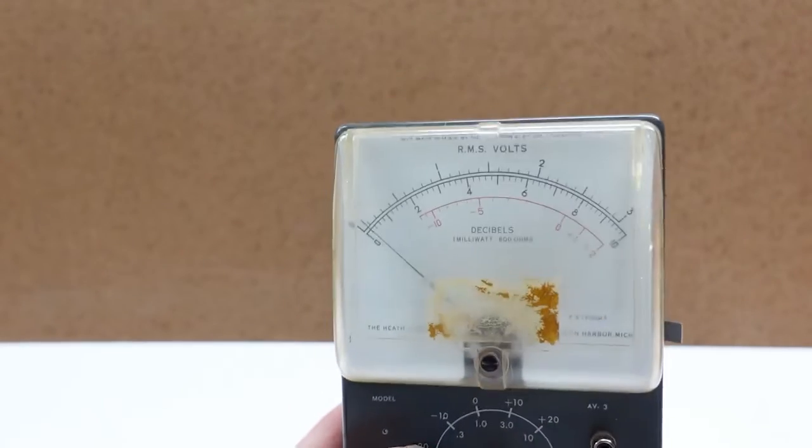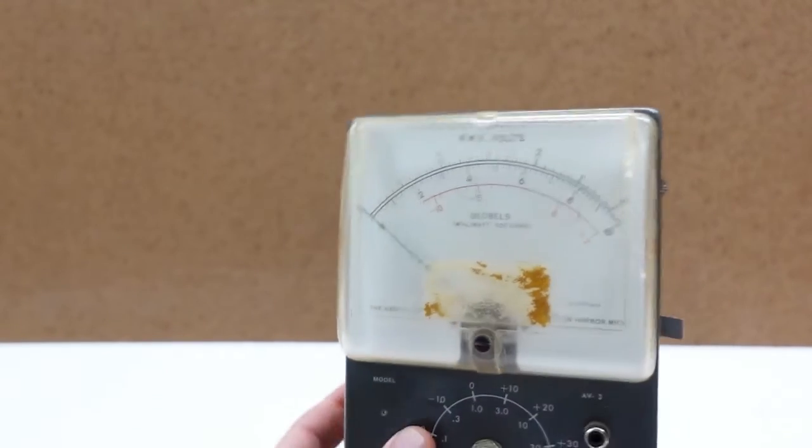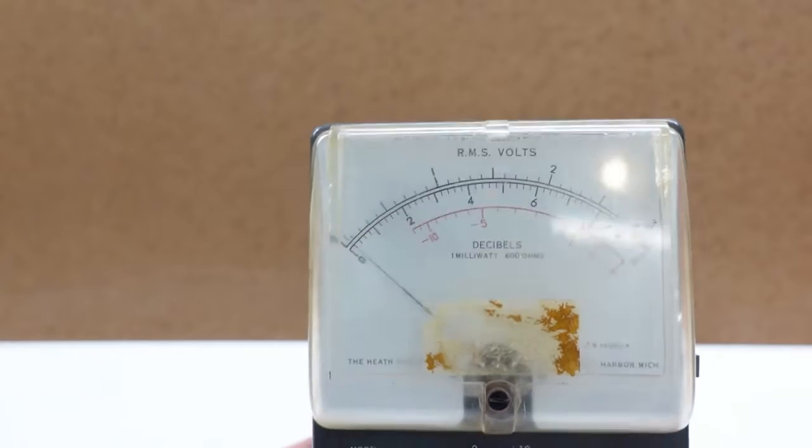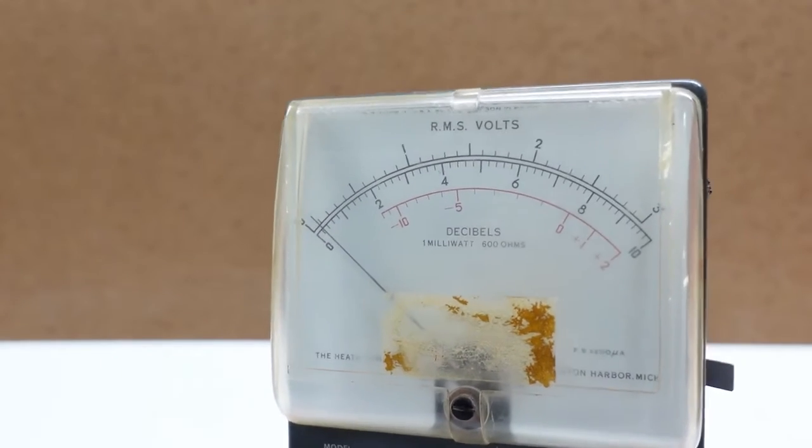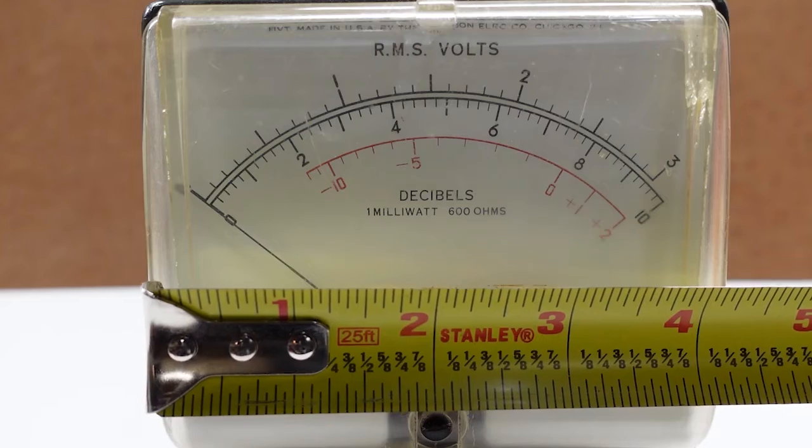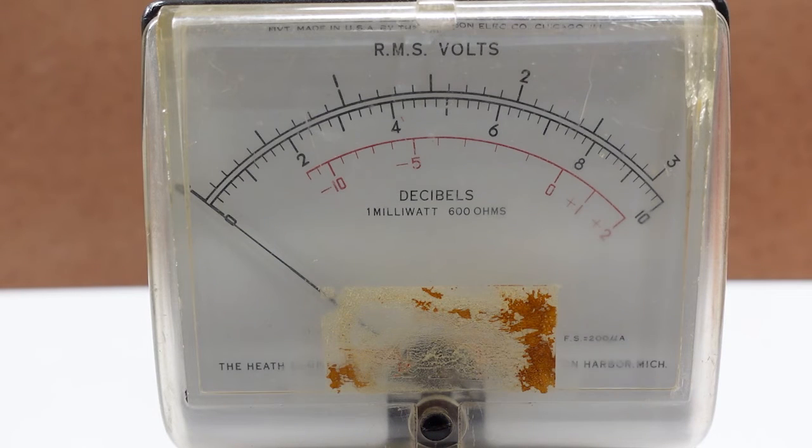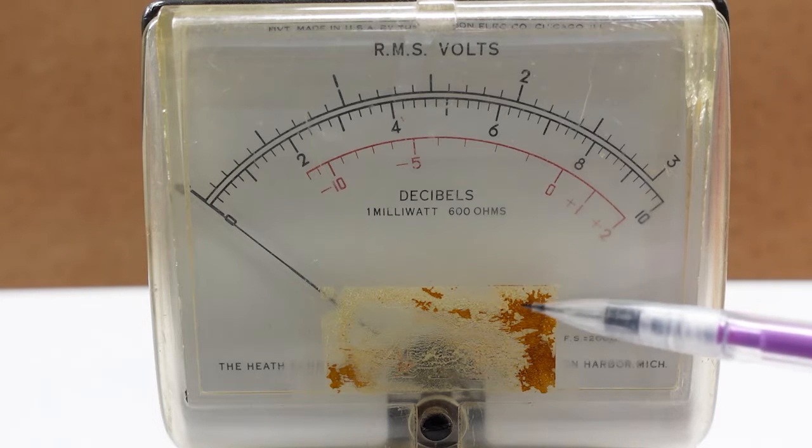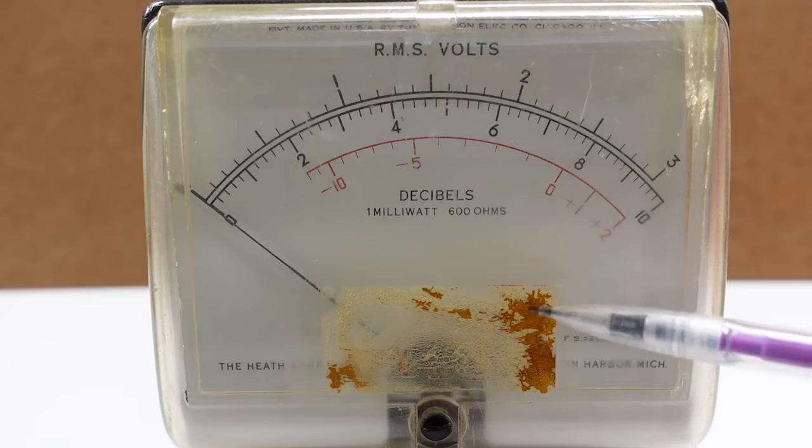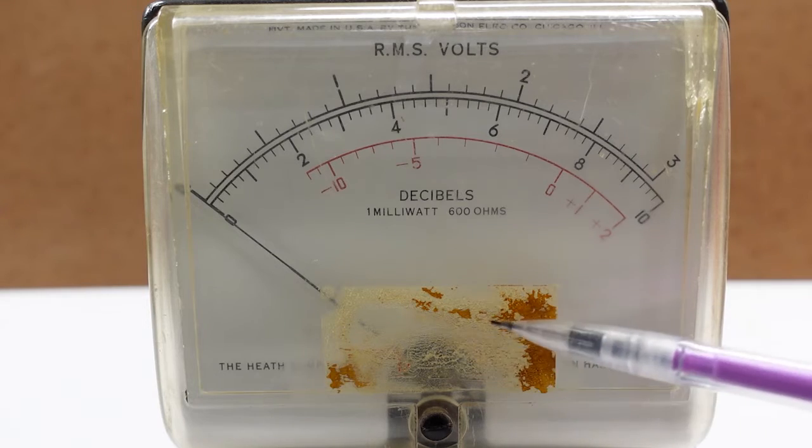But, of course, the nicest feature is the large analog meter. It was made by Simpson for Heathkit, and the text says full scale is 200 microamps. It's about 4 inches square, and aside from the slightly yellowed cover, it is in very good shape visually, and still has crisp characters and gradations. This gunk here on the front is likely adhesive residue left behind from an old calibration sticker.